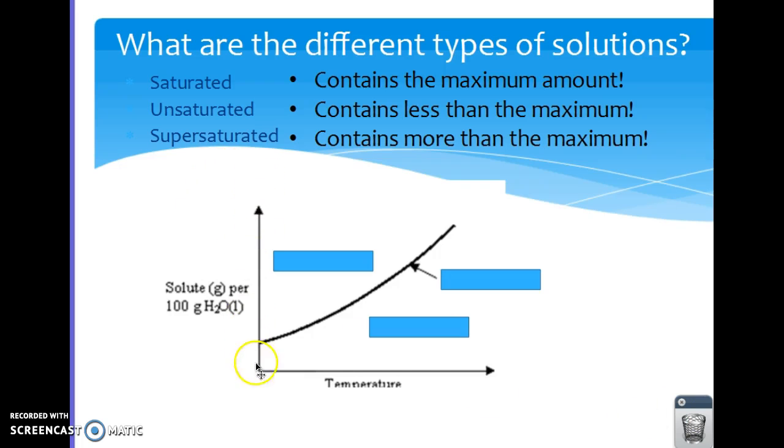So a typical solubility graph would look like this. Temperature is on the bottom. Solute usually per 100 grams of water is on the y-axis. So if something is on the line, we call it saturated.